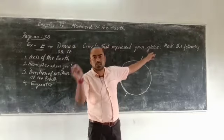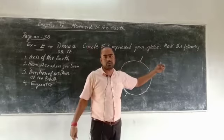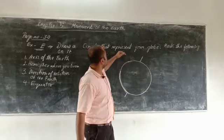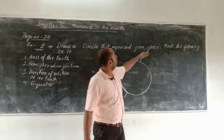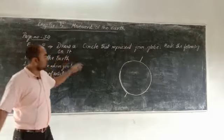That means you have to draw a circle in your notebook with a radius of about 5 to 6 centimeters. Draw a circle that represents your globe and mark the following on it.